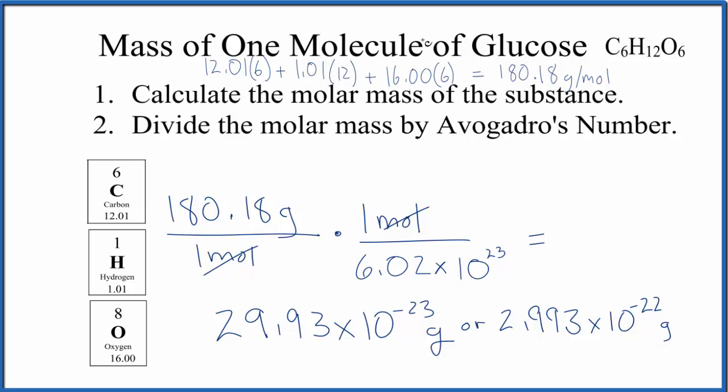So to recap, to get the mass of one molecule of glucose, C6H12O6, we found the molar mass. We divided that by Avogadro's number, and that gave us the number of grams in one molecule of glucose.